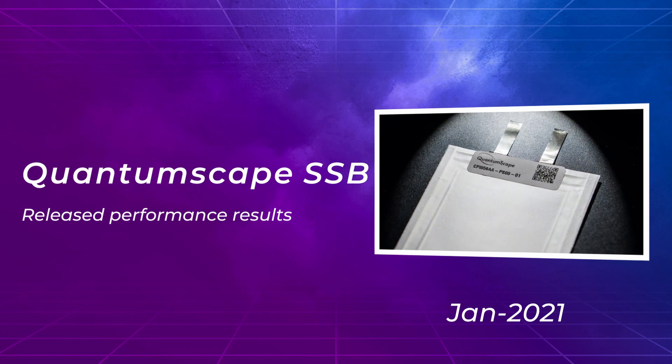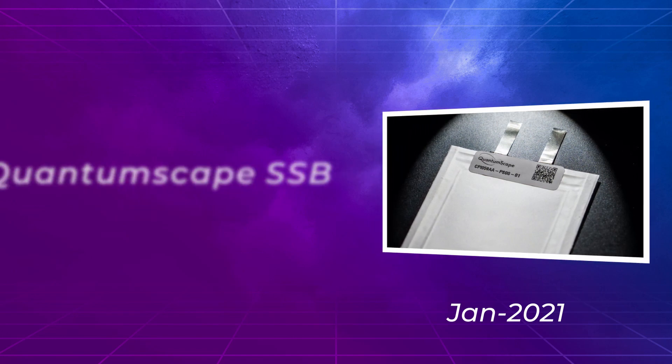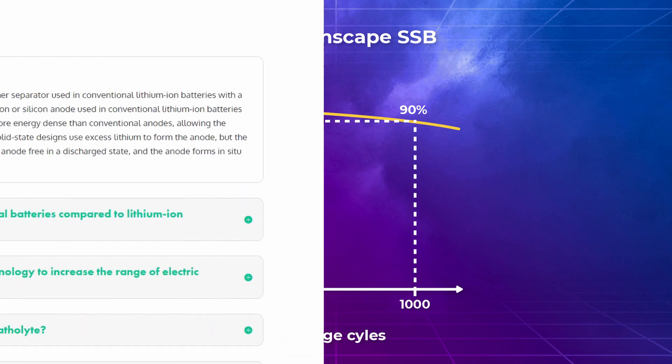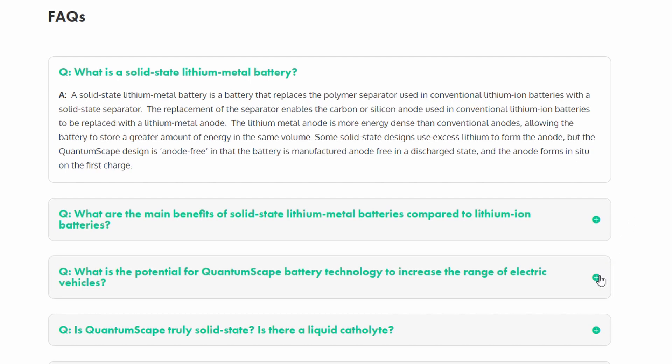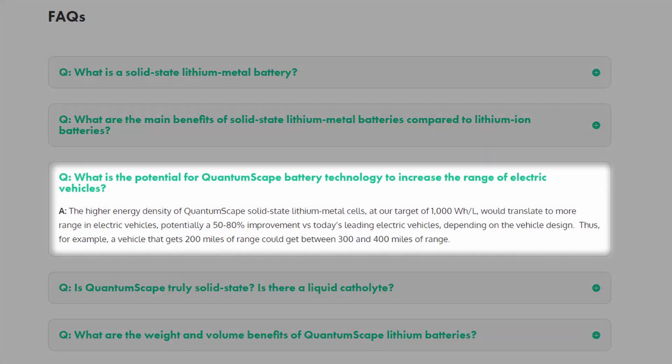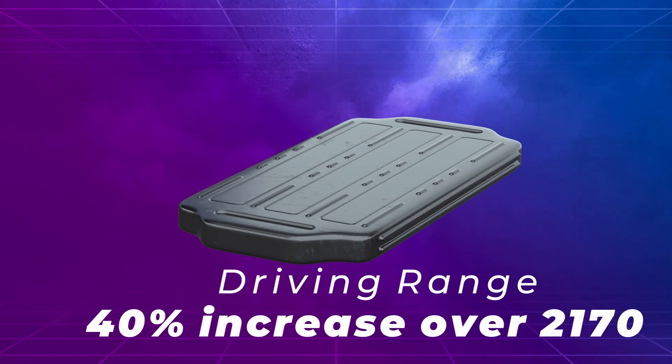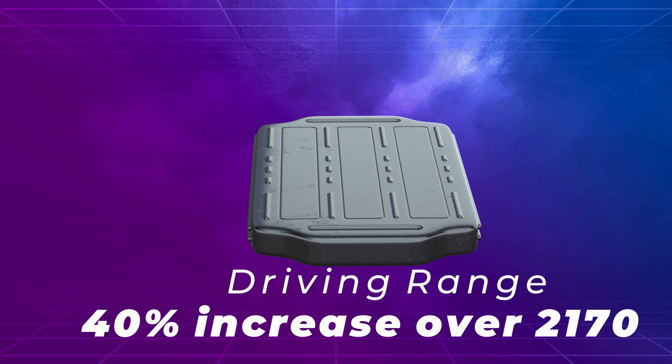In January 2021, QuantumScape revealed performance results of their solid-state battery. After a thousand charge cycles, the single-layer cells retained 90% of its energy capacity. QuantumScape targets to achieve an energy density of a thousand watt-hours per liter for their multi-layer cell, which will provide a 40% increase in range compared to the 2170 cell used in the Tesla Model 3, which has an energy density of 713 watt-hours per liter.